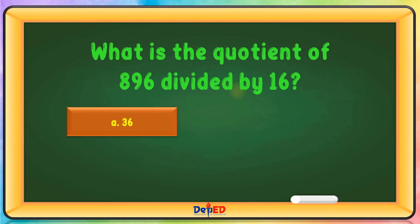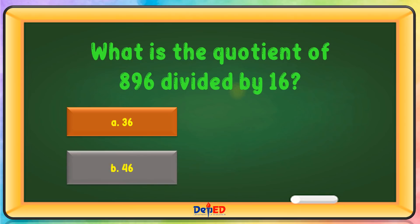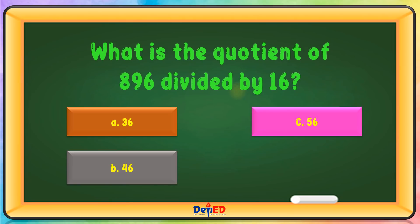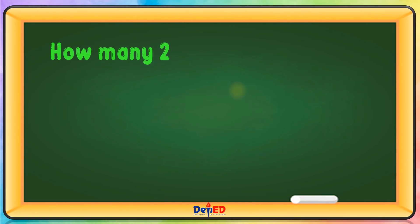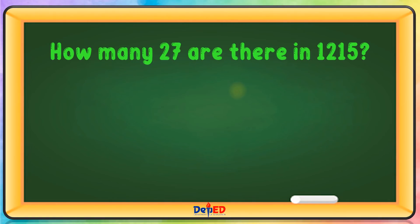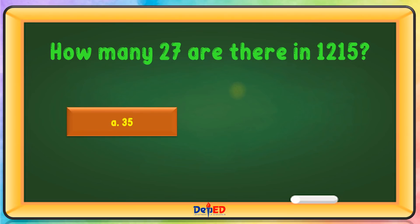What is the quotient of 896 divided by 16? A. 36, B. 46, C. 56, or D. 66. The correct answer is B.